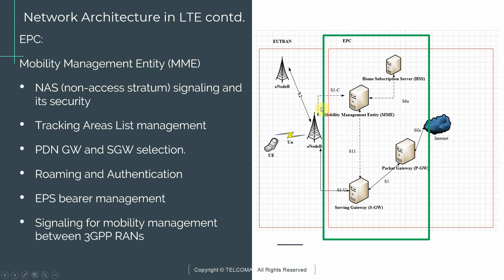Before we go down that route, I want to point one thing out. You may notice that the connections from the MME out to these different network elements are represented as broken or dotted connections. What that means is these are actually control plane connections rather than user plane connections. So just keep in mind that the MME is more of a control plane network entity rather than a user plane network entity.